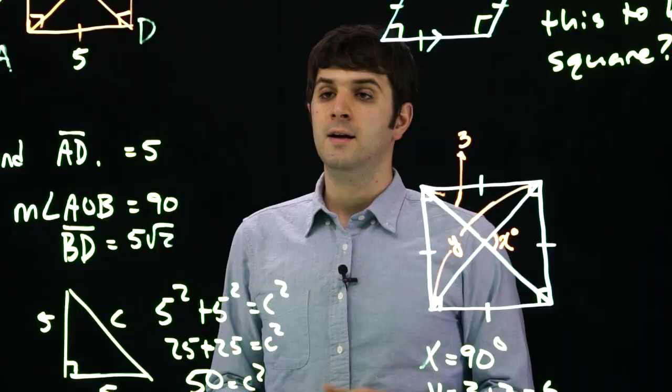So in later chapters, we're going to be comparing, looking at all the quadrilaterals, but for now, hopefully this gave you a decent idea of the differences and similarities between rectangles, rhombus, and squares. Thanks for watching, guys.